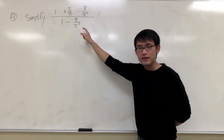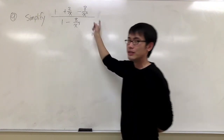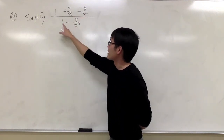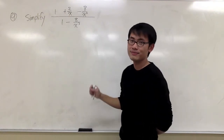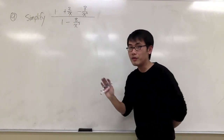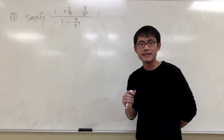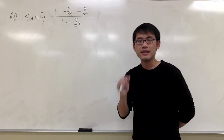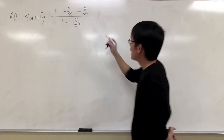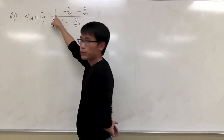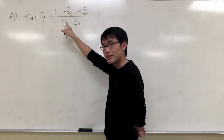Whenever we are trying to simplify a complex fraction, it means that you have a big fraction, but you also have small fractions on the top and also on the bottom. Whenever you are trying to simplify this, what you need to do first is identify the LCD, the lowest common denominator. I will only pay attention to the denominators first.